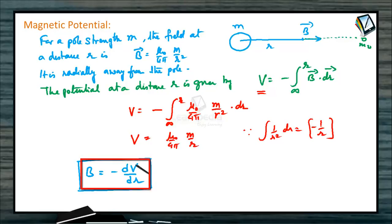Magnetic potential is defined as that quantity whose negative rate with distance gives magnetic field strength. B is equal to minus dV by dr.